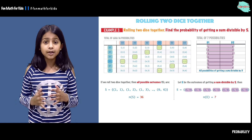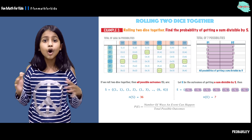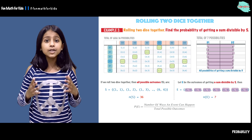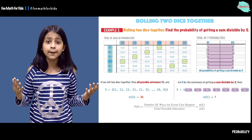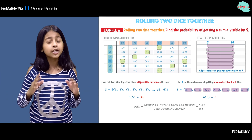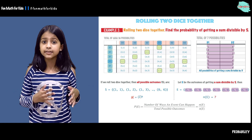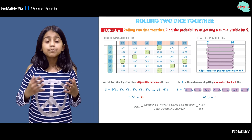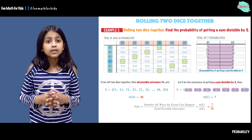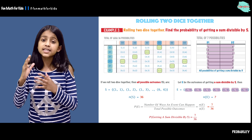Now let's talk about our formula. The formula is the number of ways an event can happen or occur over the total possible outcomes, which is the number of elements in E over the number of elements in S. The number of elements in E is seven and the number of elements in S is 36. That is why we have seven over 36.